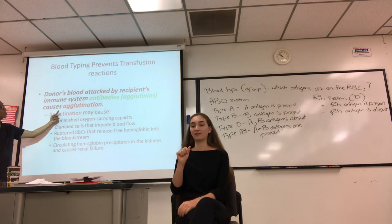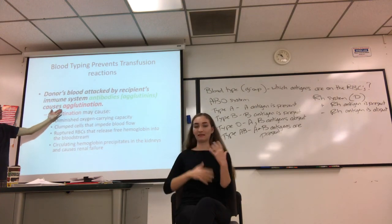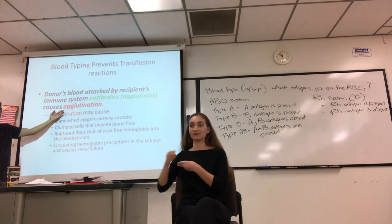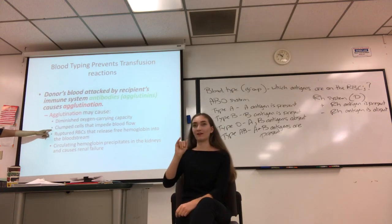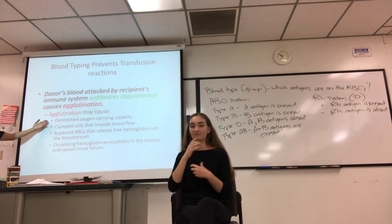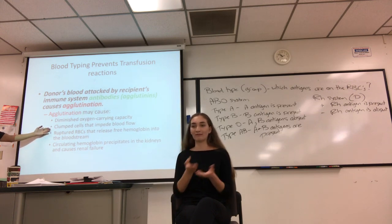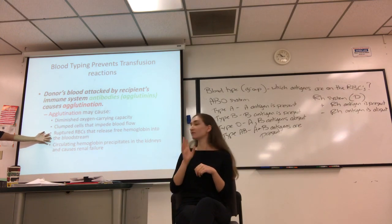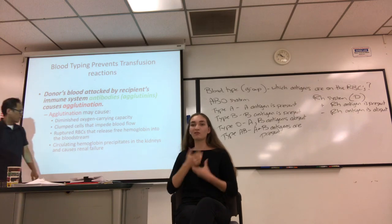Agglutination may occur: blood all clumps up, diminishing the oxygen carrier capacity; the clumped blood cells impede flow, rupture, and release hemoglobin which can clog your kidneys and lead to kidney failure. There are all kinds of problems — you need to prevent it. When determining if donating blood is safe, you consider that the donor's RBCs do not have antigens that will react with the recipient's antibodies.